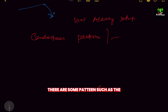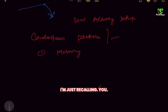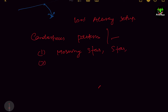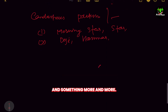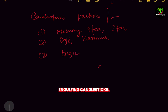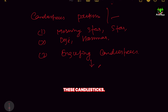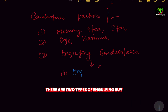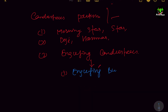In candlestick patterns there are patterns such as Morning Star, Evening Star, Doji, Hammer, and more. You may have heard about engulfing candlesticks as well. There are two types of engulfing: engulfing buy and engulfing sell.